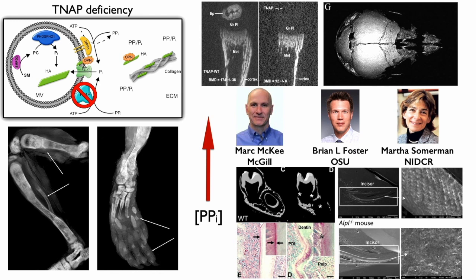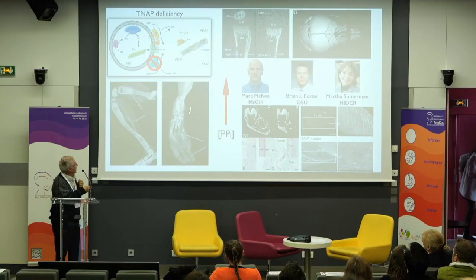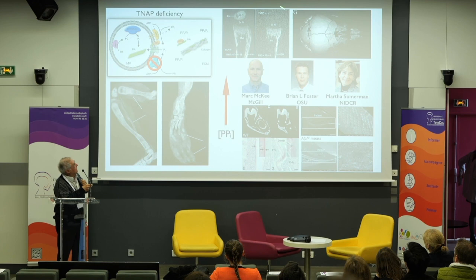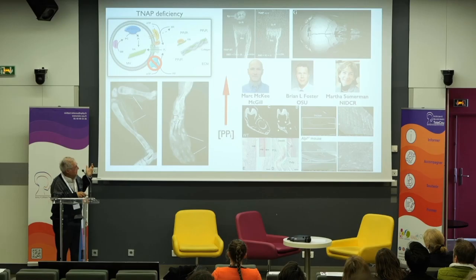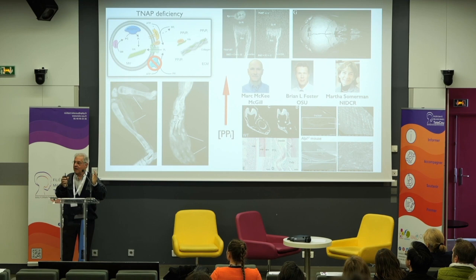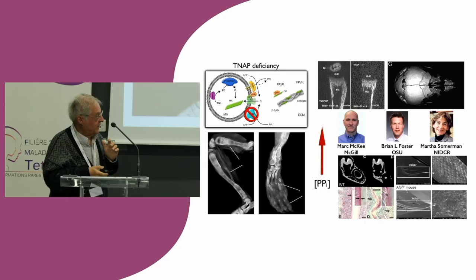What happens if we knock out alkaline phosphatase? This is the phenotype: you essentially have soft bones, inappropriate mineralization of the skeleton, lack of secondary ossification centers, craniofacial abnormalities, and abnormalities in the tooth organ — lack of acellular cementum, problems in enamel. All the tooth organ layers are affected by the lack of alkaline phosphatase.